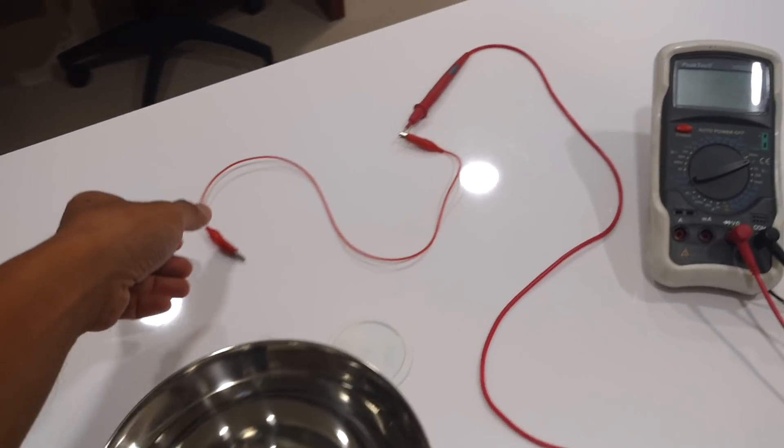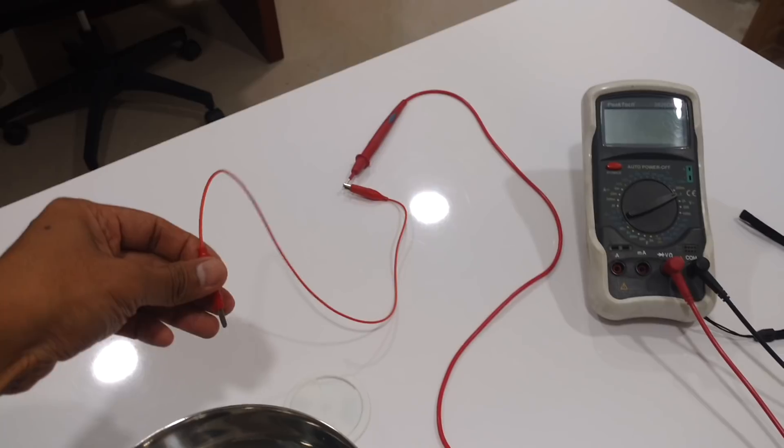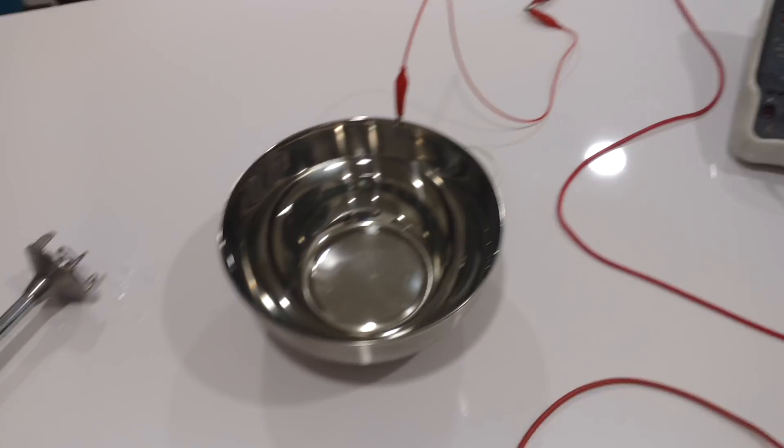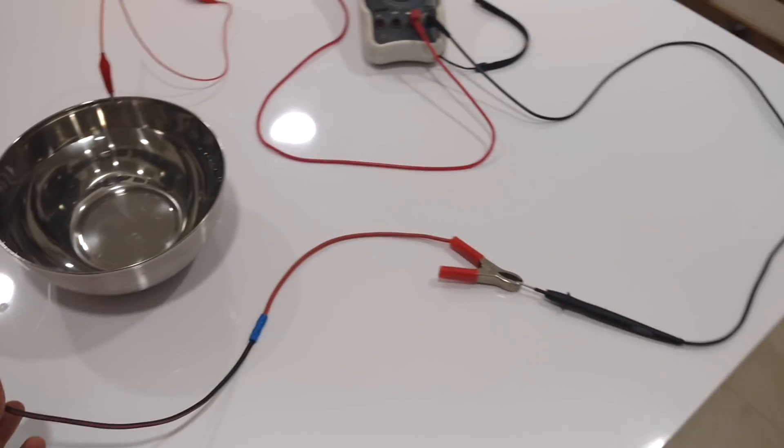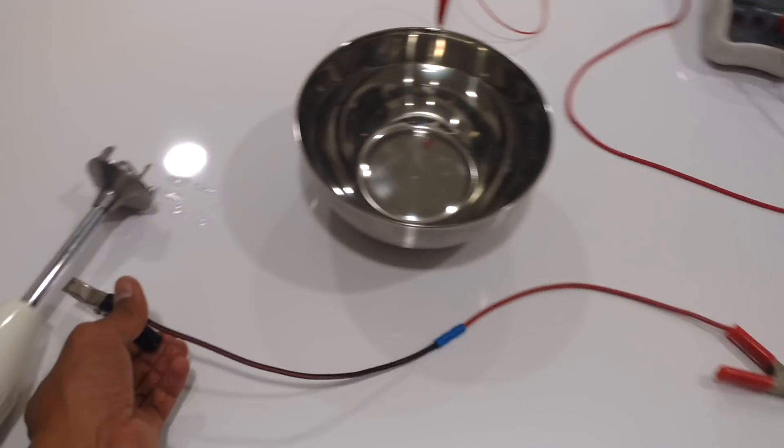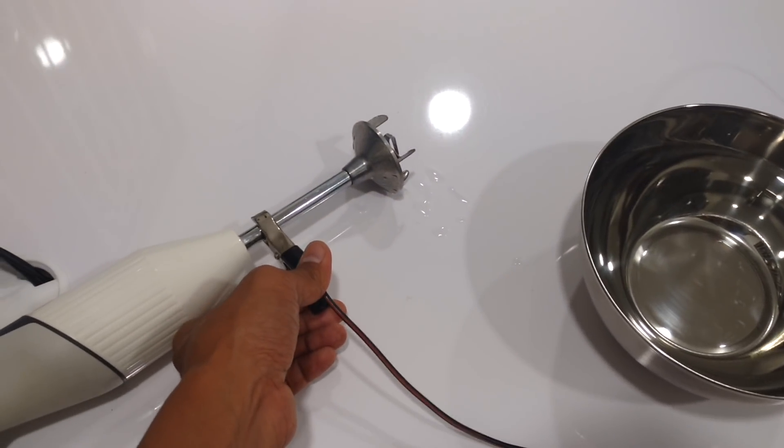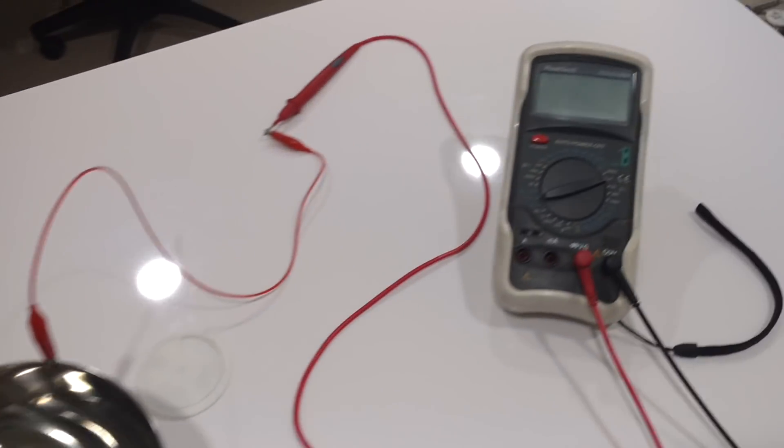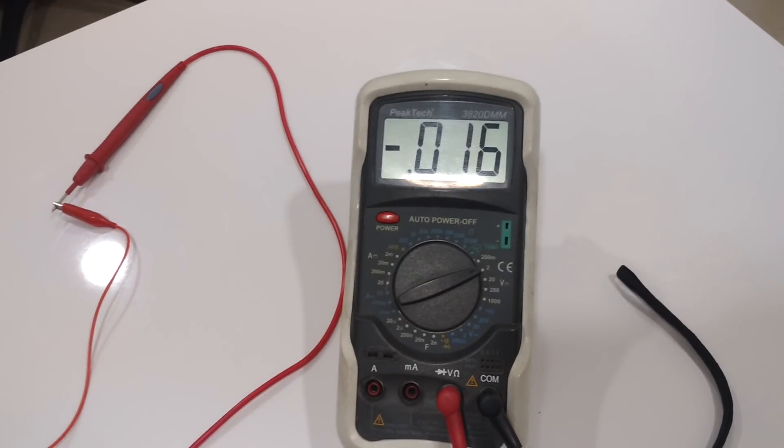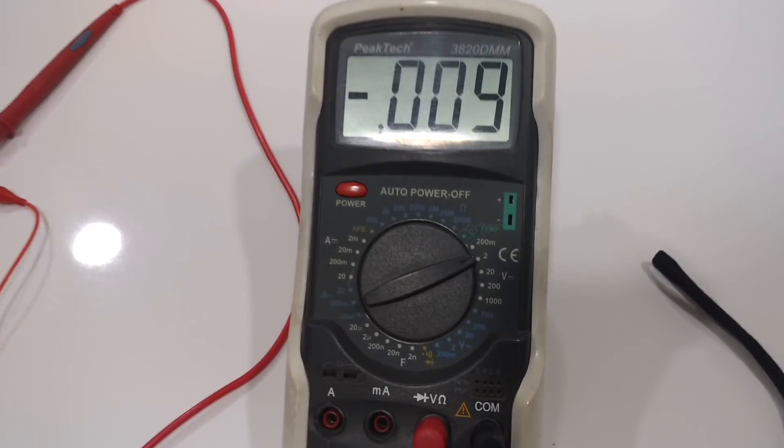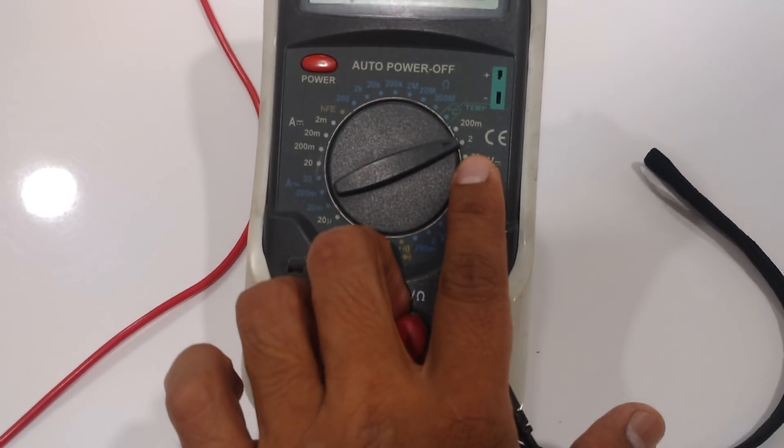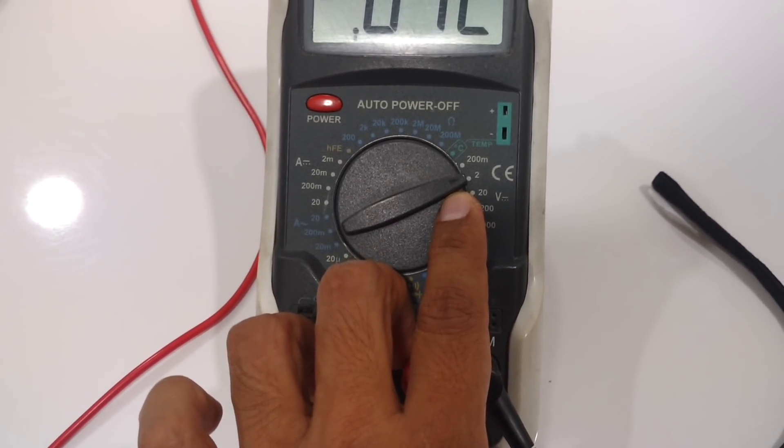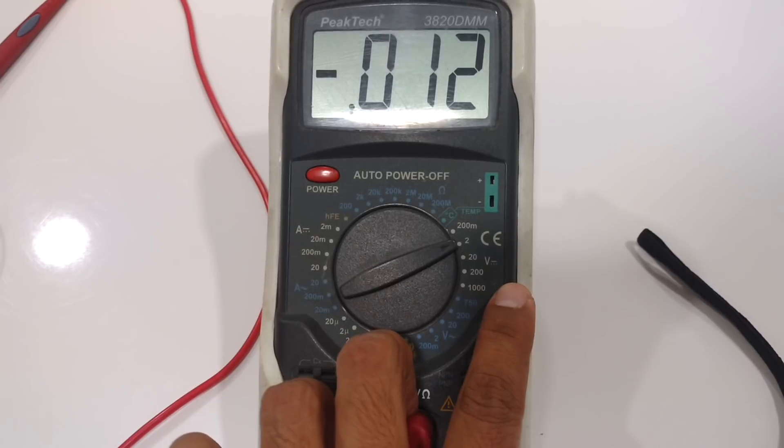Now I am going to connect this cable and this cable here to the mixer, and then turn on the multimeter. It is at the 2V range, DC pole.